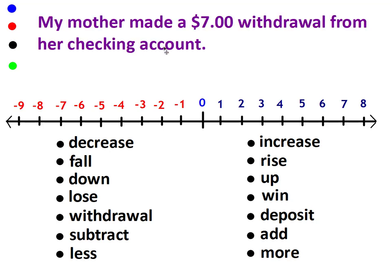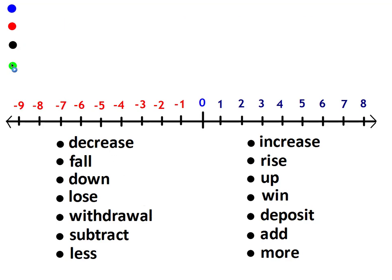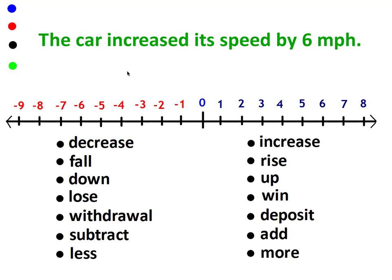My mother made a $7 withdrawal from her checking account. She withdrew the money, withdrawal. She took it out, she subtracted it. And the last one: the car increased its speed by six miles per hour. So the car started to go faster, so it would be a positive number.